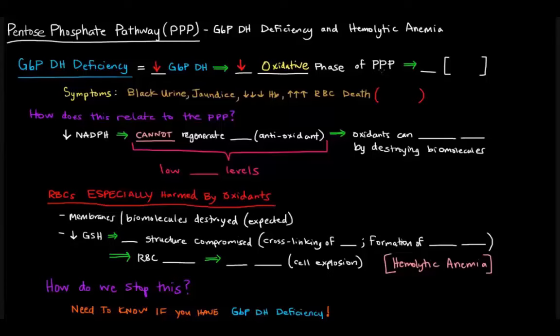So if we don't have G6P dehydrogenase, we could still create R5P in the non-oxidative phase, but as far as NADPH goes, we're probably going to have low levels of NADPH.